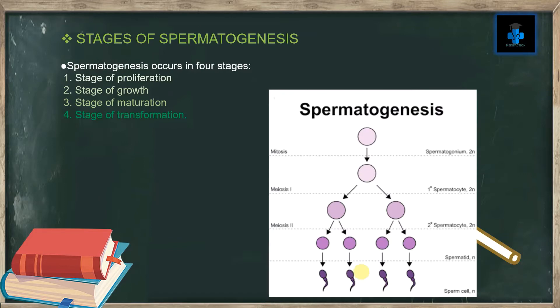Stages of spermatogenesis: spermatogenesis occurs in four stages. Number one is the stage of proliferation, number two is the stage of growth, number three is the stage of maturation, and number four is the stage of transformation.